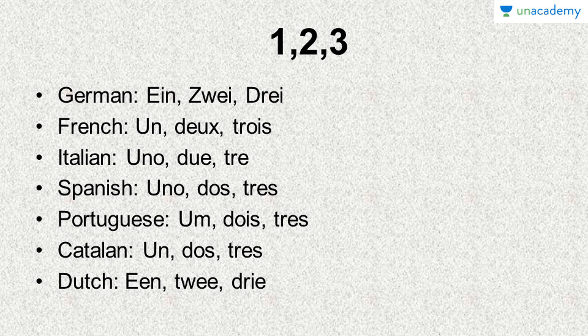Um in Portuguese — the M is a bit nasal. In Catalan: un, dos, tres. In Dutch: een, twee and drie. It's a bit like German — een, twee and drie.